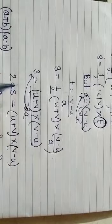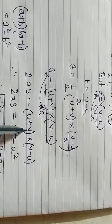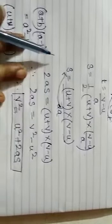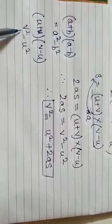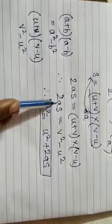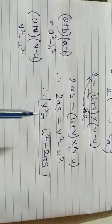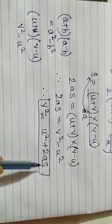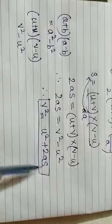So it becomes 2as is equal to u plus v into v minus u. According to my formula a plus b and a minus b, what will it become? a square minus b square. As it will become v square minus u square. So it becomes 2as is equal to v square minus u square, which is my Newton's third equation says that, third equation of motion, v square is equal to u square plus 2as. v square is equal to u square plus 2as. Thank you.